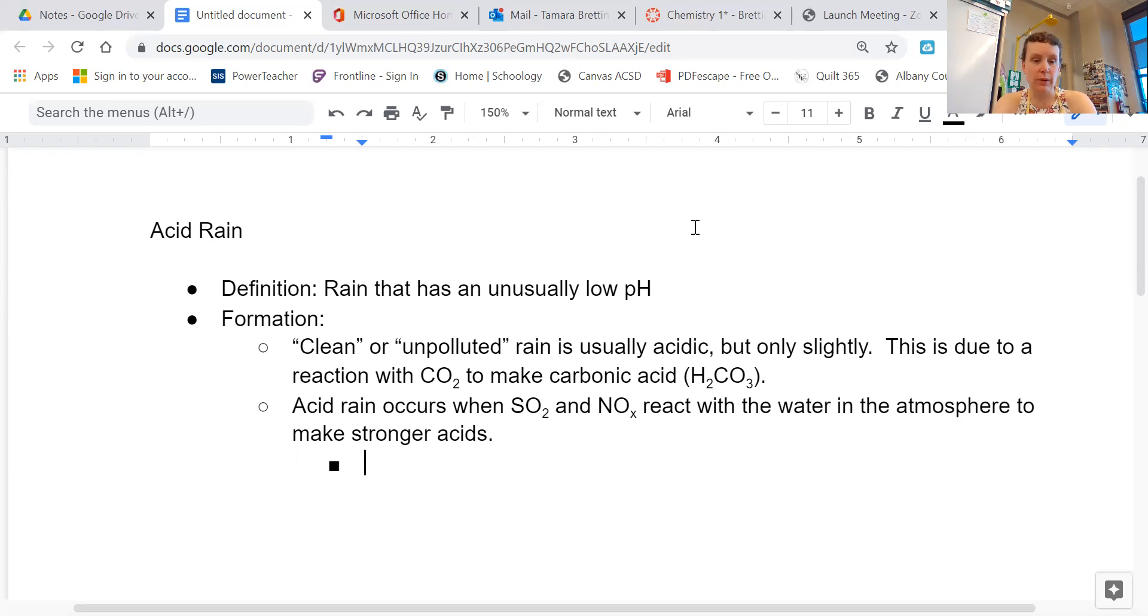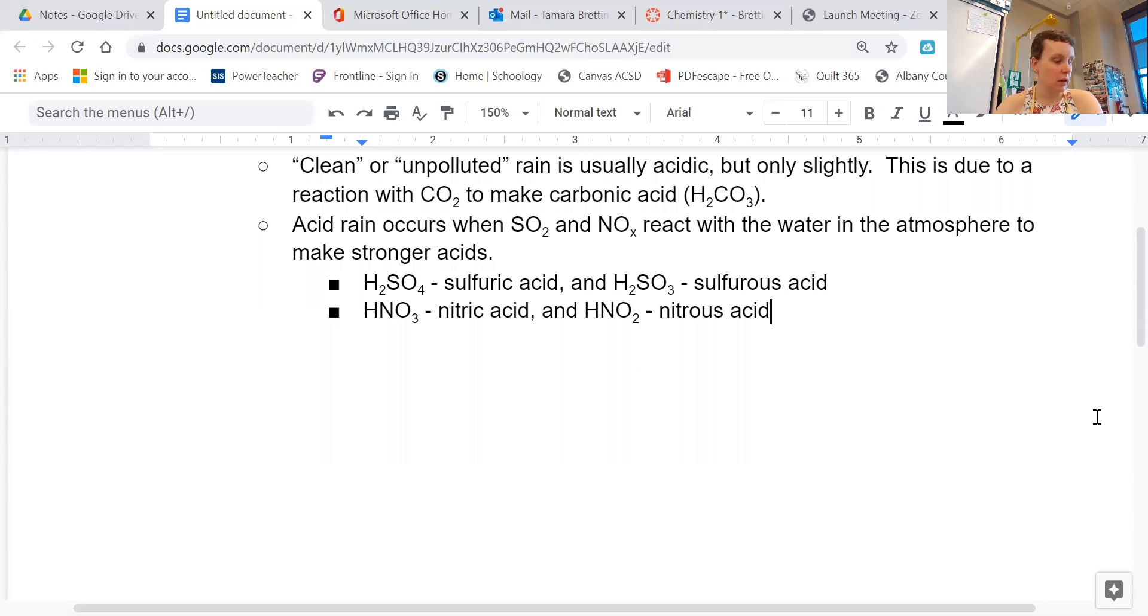Let's list a few of those stronger acids. We have H2SO4, which we named on a previous page, that's sulfuric acid. And H2SO3 is sulfurous acid. Both of those are formed when sulfur dioxide reacts with rainwater. And then we have HNO3, which is nitric acid, and HNO2, which is nitrous acid. Both of those can be formed when reacting with the nitrogen oxide compounds, the NOx compounds.